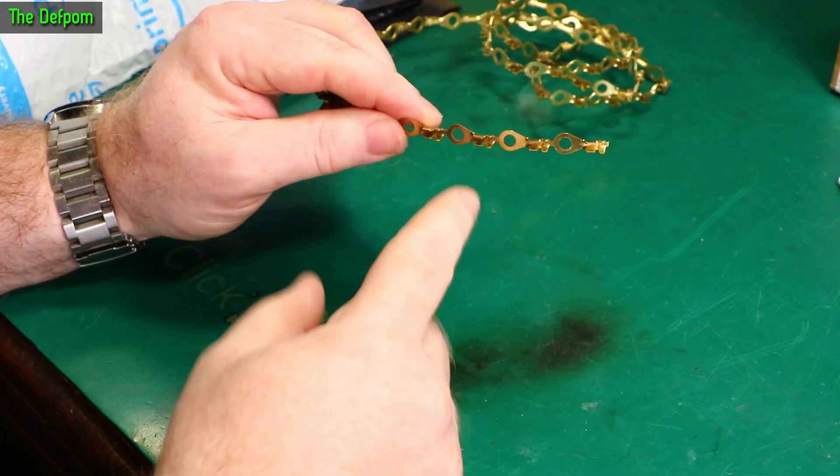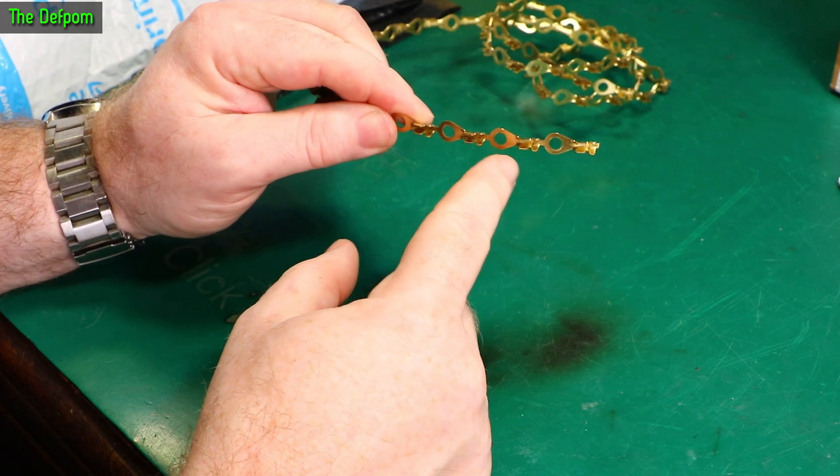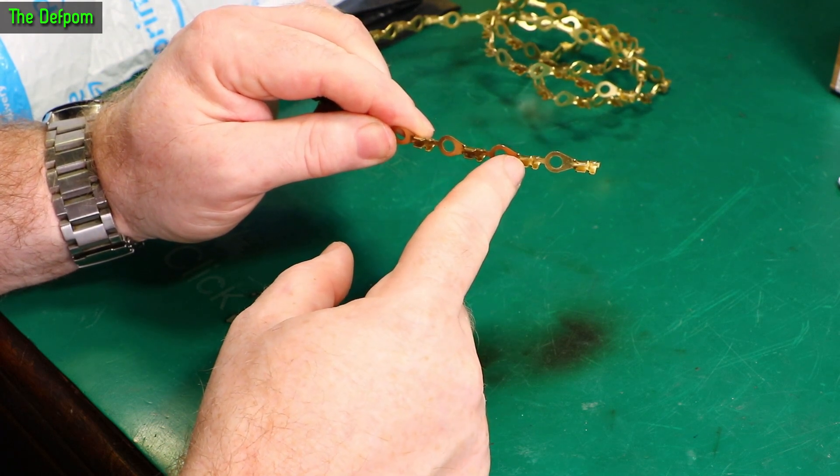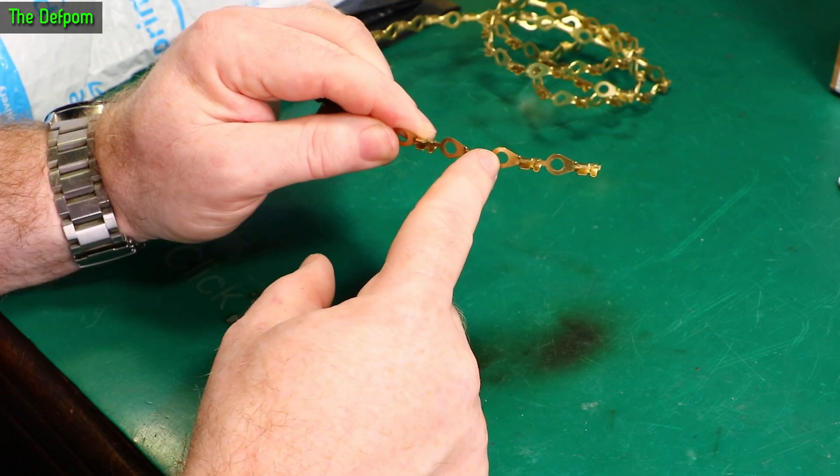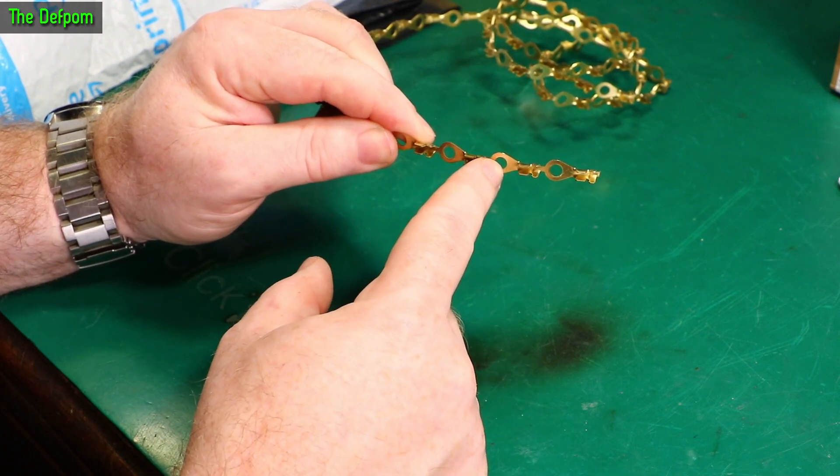So the first step will be punching the outline and probably the center hole. That could be a second step actually. Even a third step maybe. So it could just do the outline first, then the center hole.